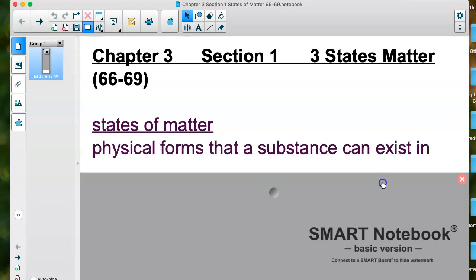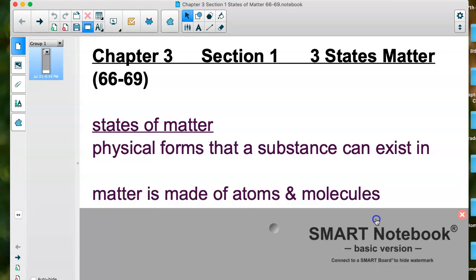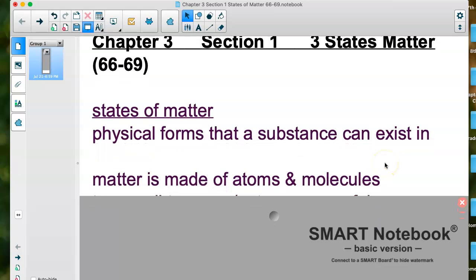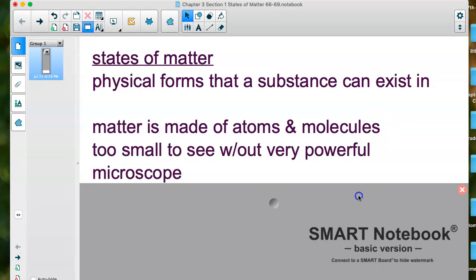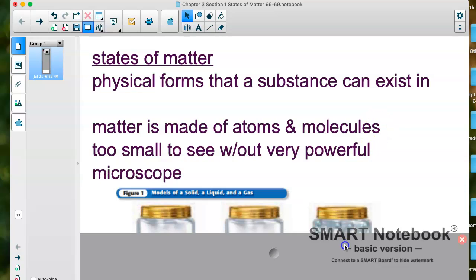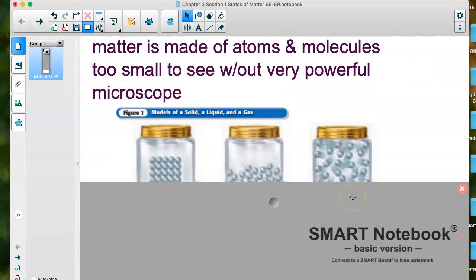We know that there are solids, liquids, and gases. They're physical forms that a substance can exist in, and we know that matter is made up of atoms and molecules. They're too small for us to see without really powerful microscopes, and we talked about this a little bit last year.